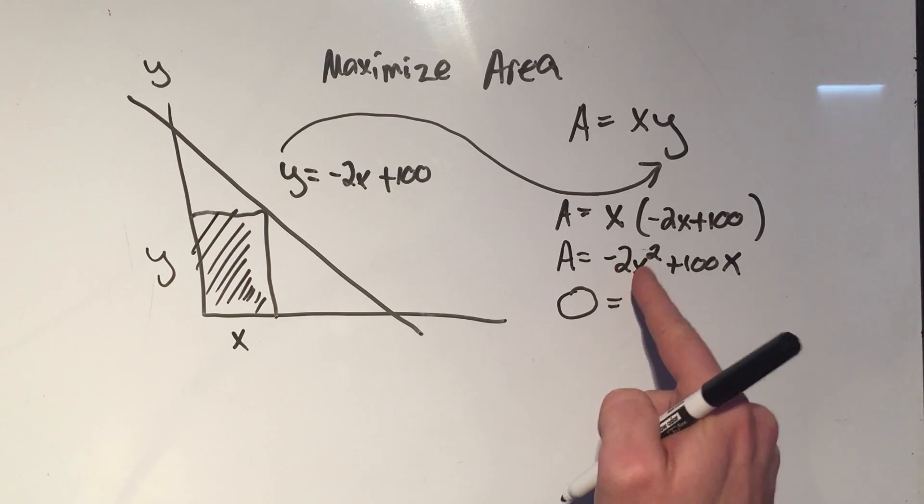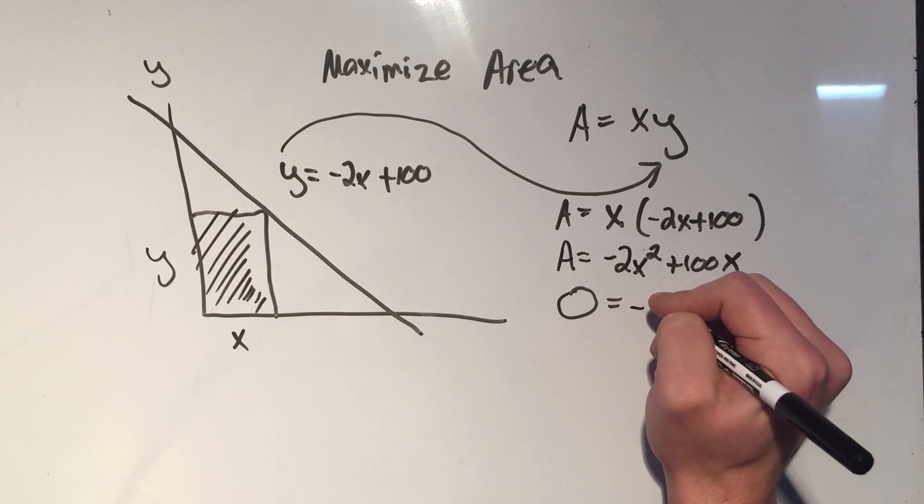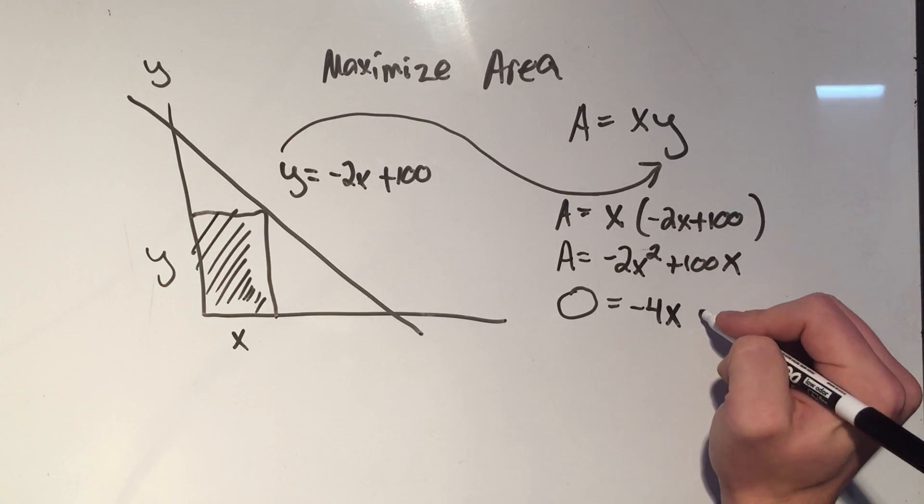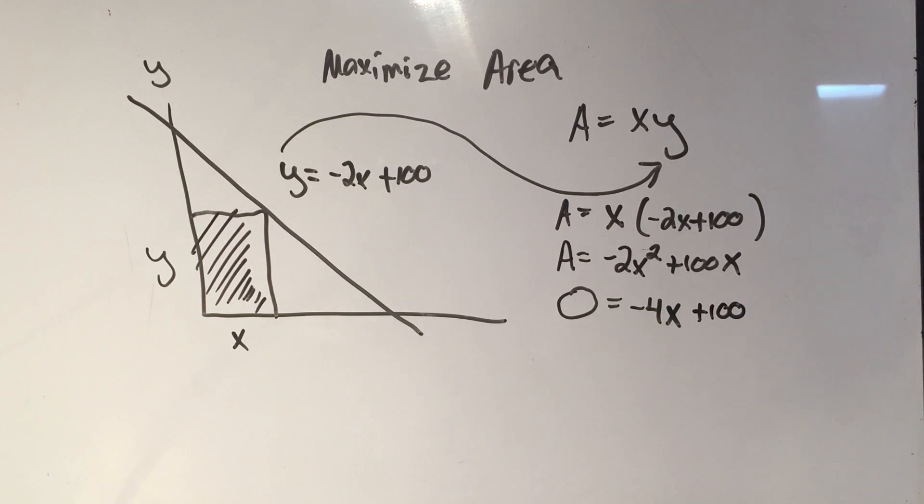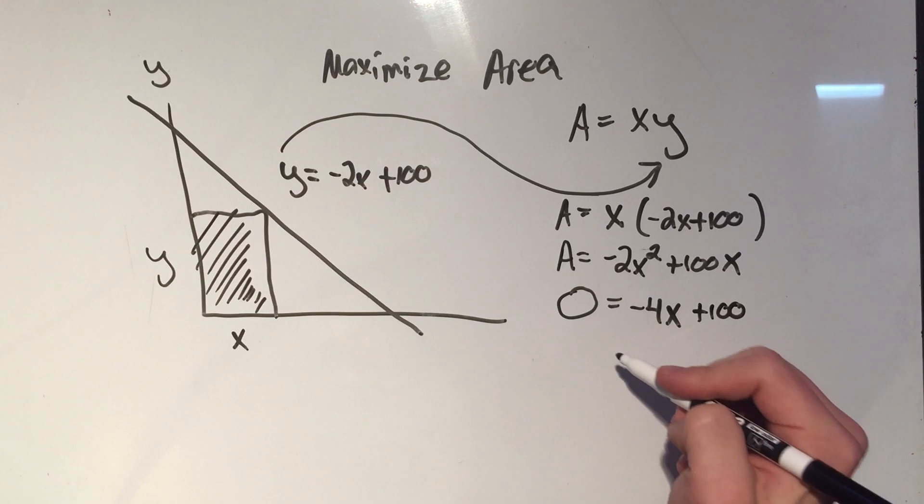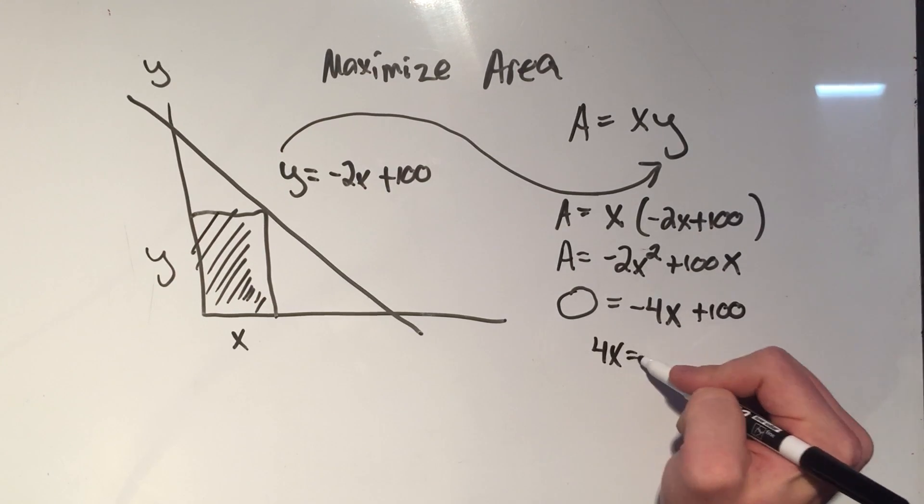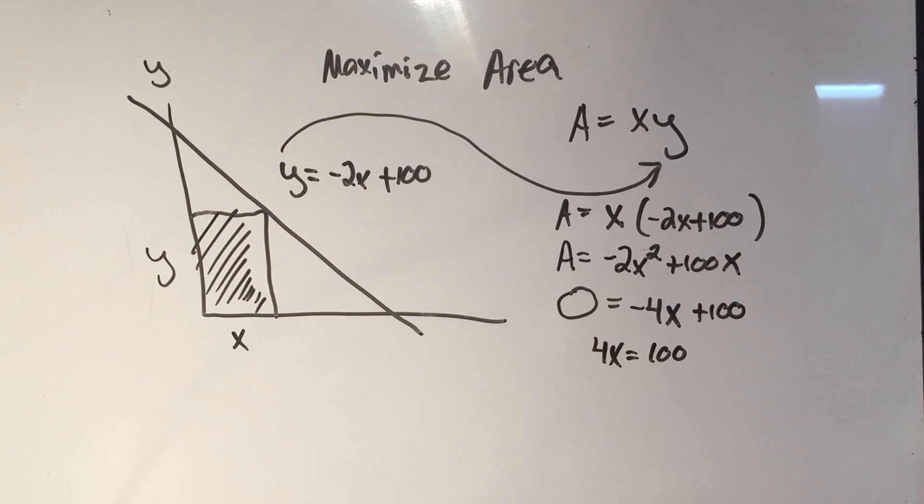So the derivative of minus 2x squared. I think that's minus 4x. The derivative of 100x is 100. And now I solve. Add 4x to both sides. 4x equals 100. And divide by 4. 100 divided by 4 is 25. That's x.